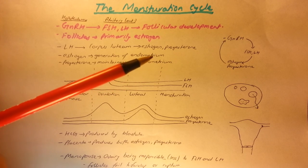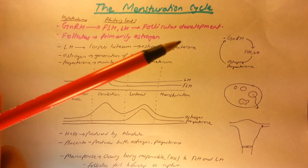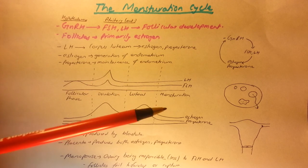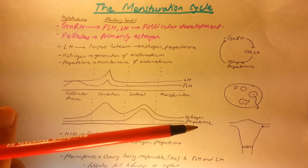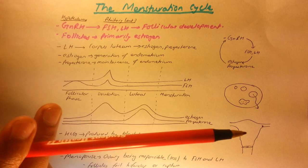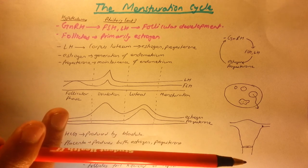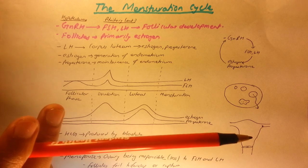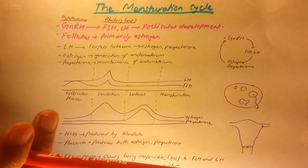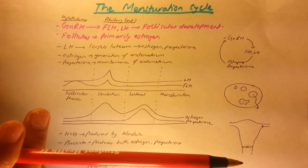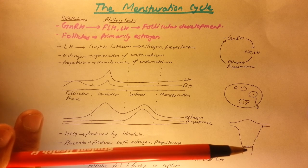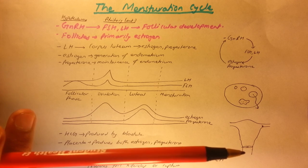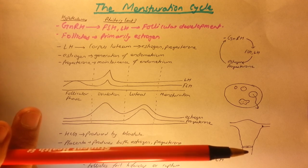When there is nothing to maintain the corpus luteum, there is nothing to keep estrogen and progesterone at high levels. Due to the lack of these two hormones, the endometrium breaks down and blood comes out of the uterus and through the vagina. That is the menstruation phase of the cycle.